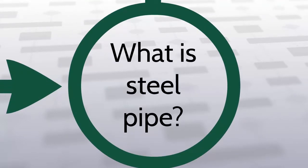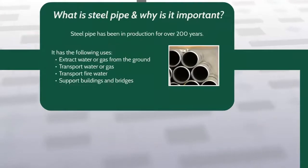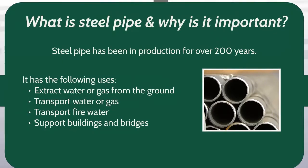What is steel pipe? Let's talk about steel pipe and why it is important. Steel pipe has been in production for over 200 years. It has the following uses: to extract water or gas from the ground, to transport water or gas, to transport fire water, and to support buildings and bridges.